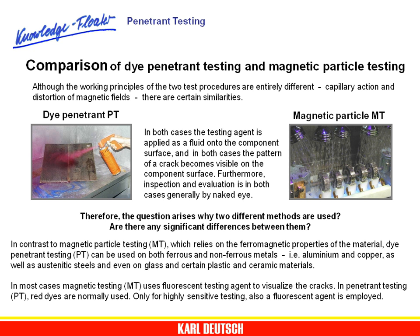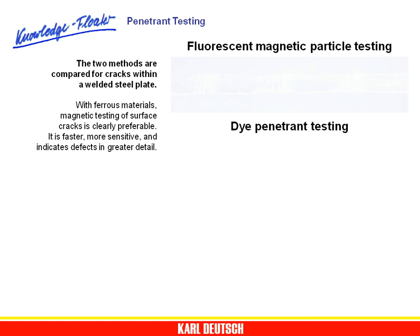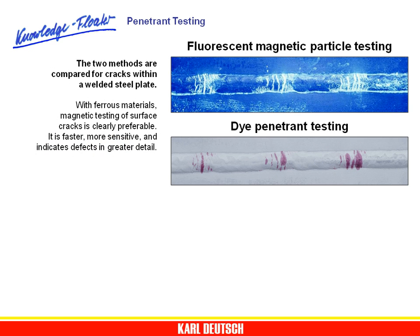In most cases, magnetic particle testing uses a fluorescent testing agent to visualize the cracks. In penetrant testing, red dyes are normally used, and only for highly sensitive testing is a fluorescent agent also employed. The two methods are compared for cracks within a welded steel plate. With ferrous metals, magnetic testing of surface cracks is clearly preferable — it is faster, more sensitive, and indicates defects in greater detail.